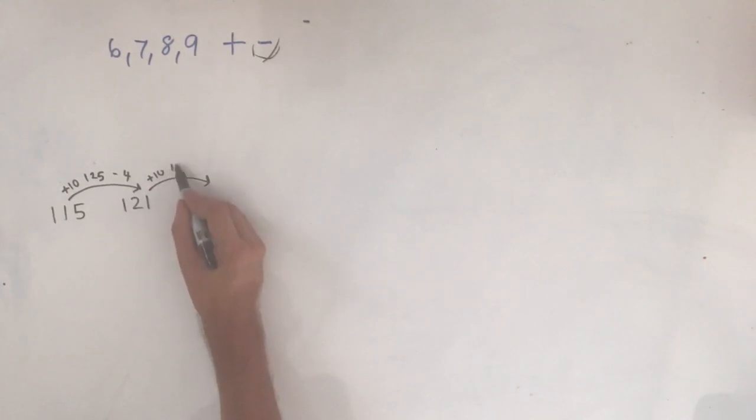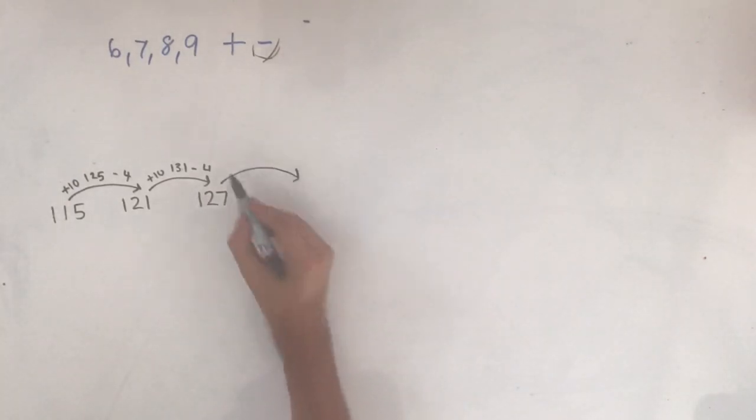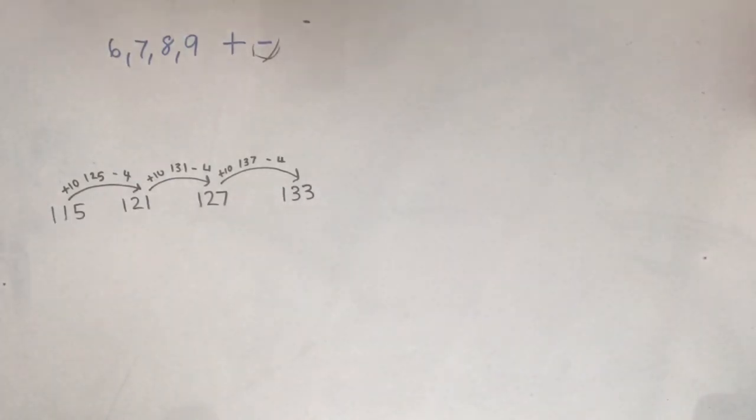121 add 10 is 131, minus 4 takes me to 127. 127 add 10 is 137, minus 4 takes me to 133. So if you find it easier to add 10 quickly and then take away than to add 5 quickly and take away, this could be a strategy that will help you out.